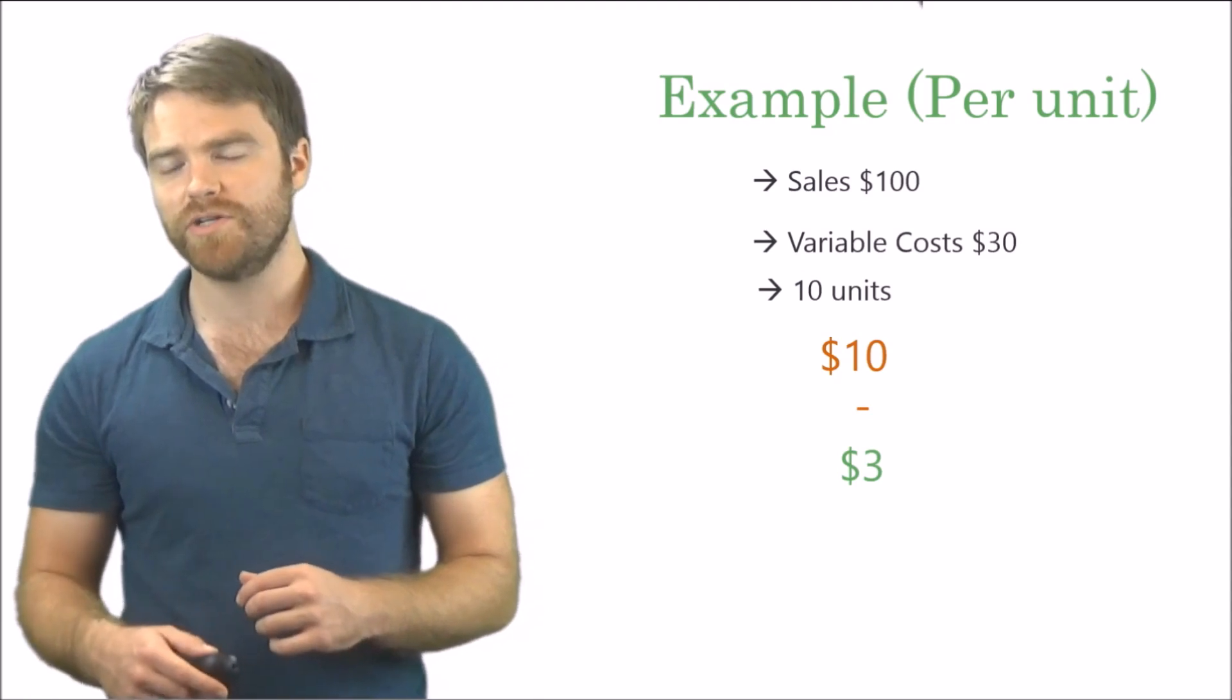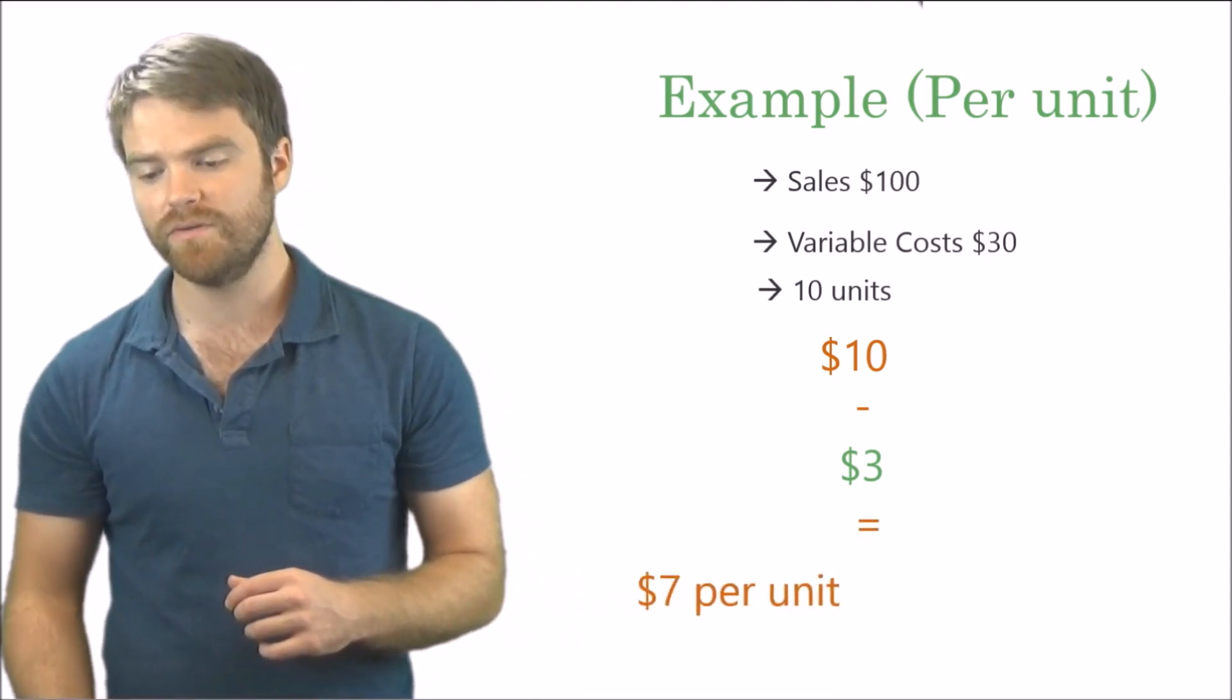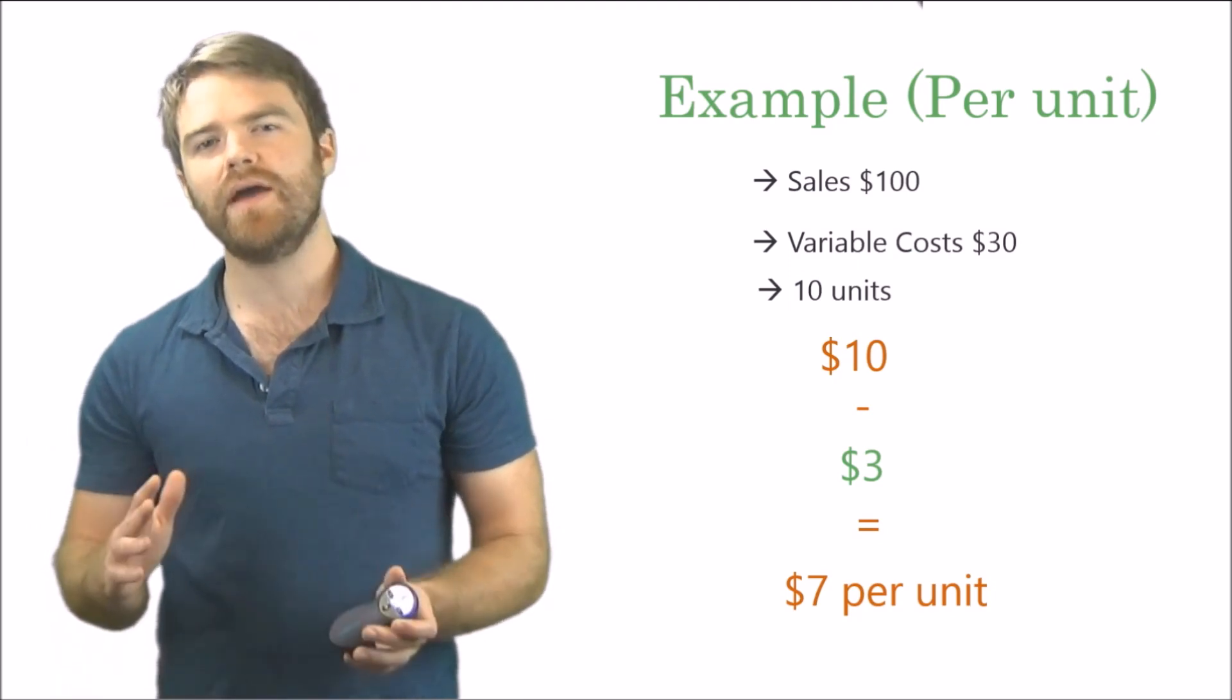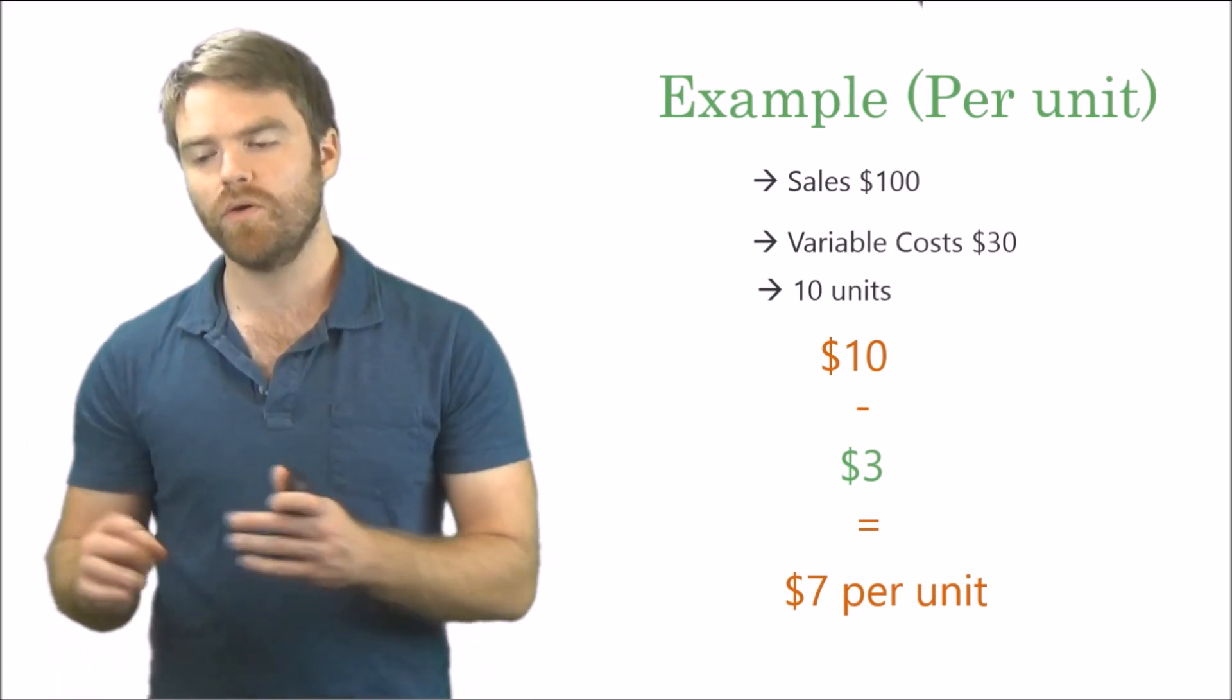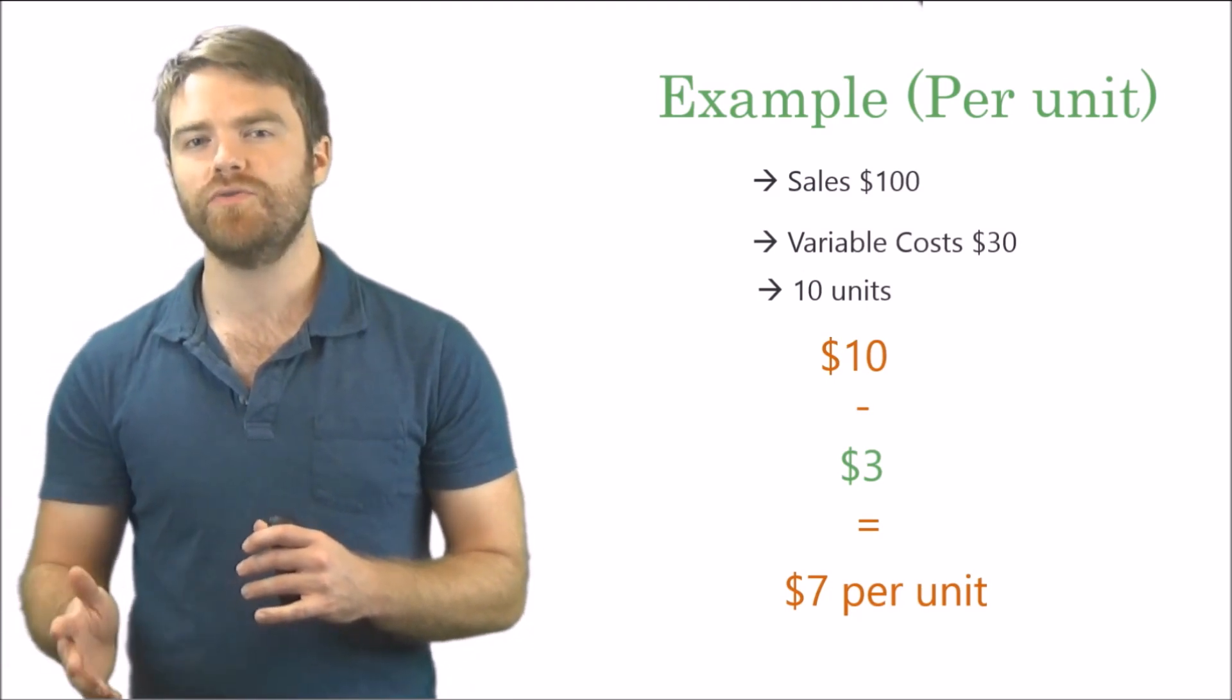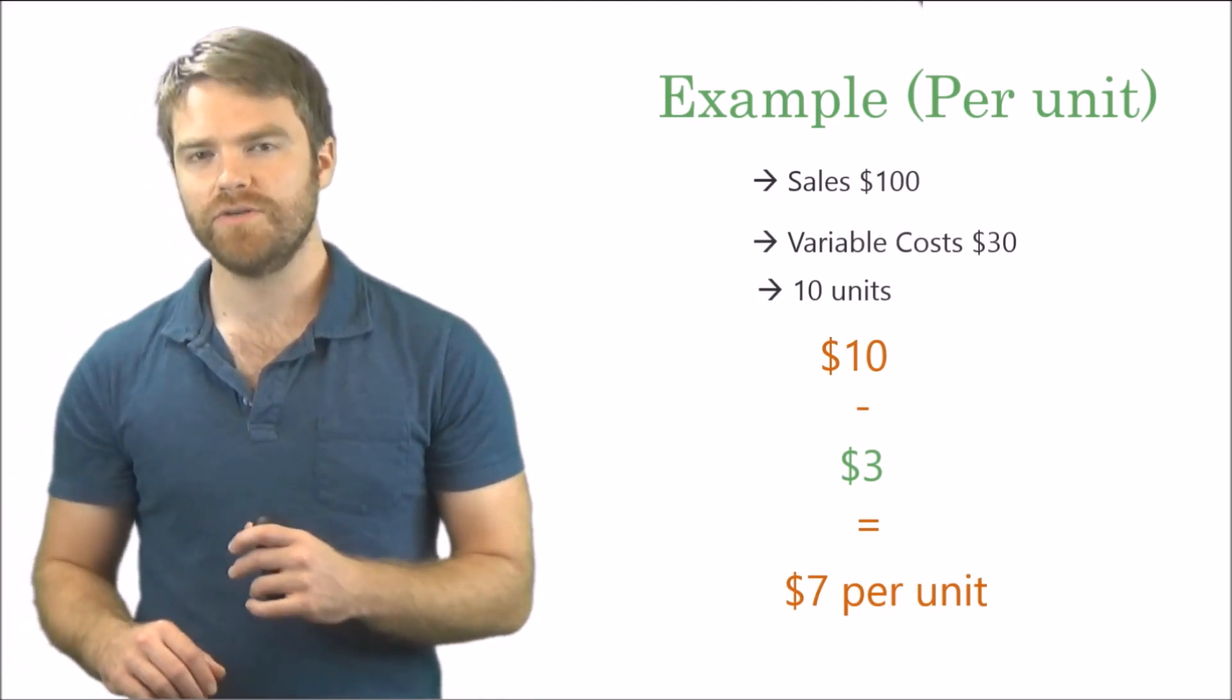So now contribution margin is $7 per unit. You can do it either way, right? In total or per unit. The only difference is you have to divide by the units produced to get to $7 a unit.